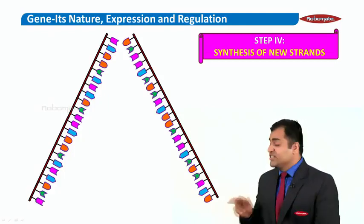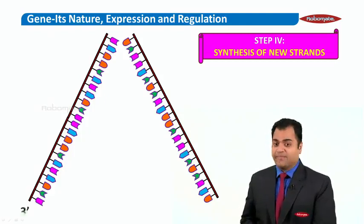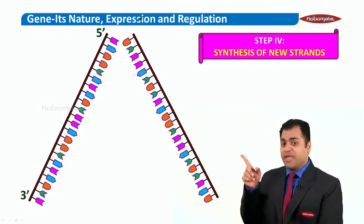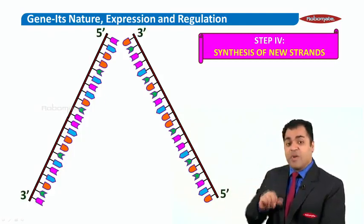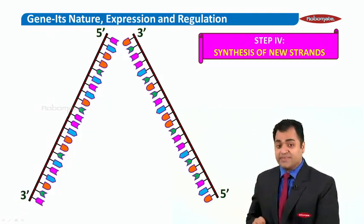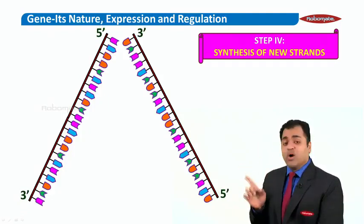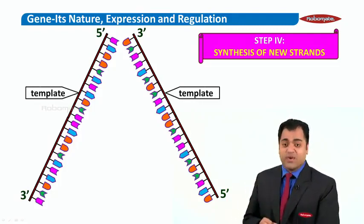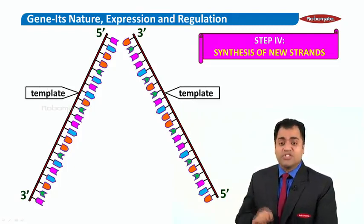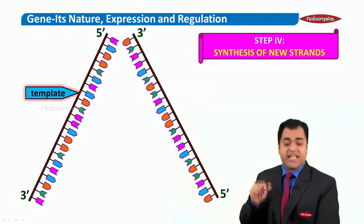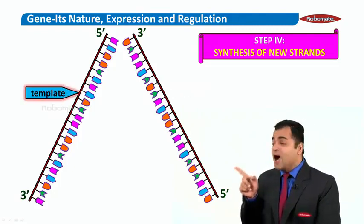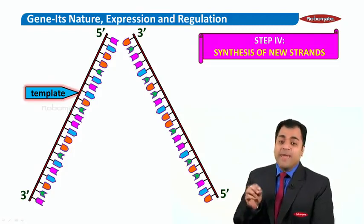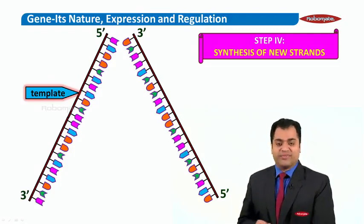Now, let's check the orientations once again. You have the 3 prime to 5 prime and you have the 3 prime to 5 prime in the opposite direction for the two strands. Now, these both single strands can act as a template for synthesizing new strands. For right now, I am going to just look at that left strand as a template. Let us see how does this template strand make a new strand on itself.